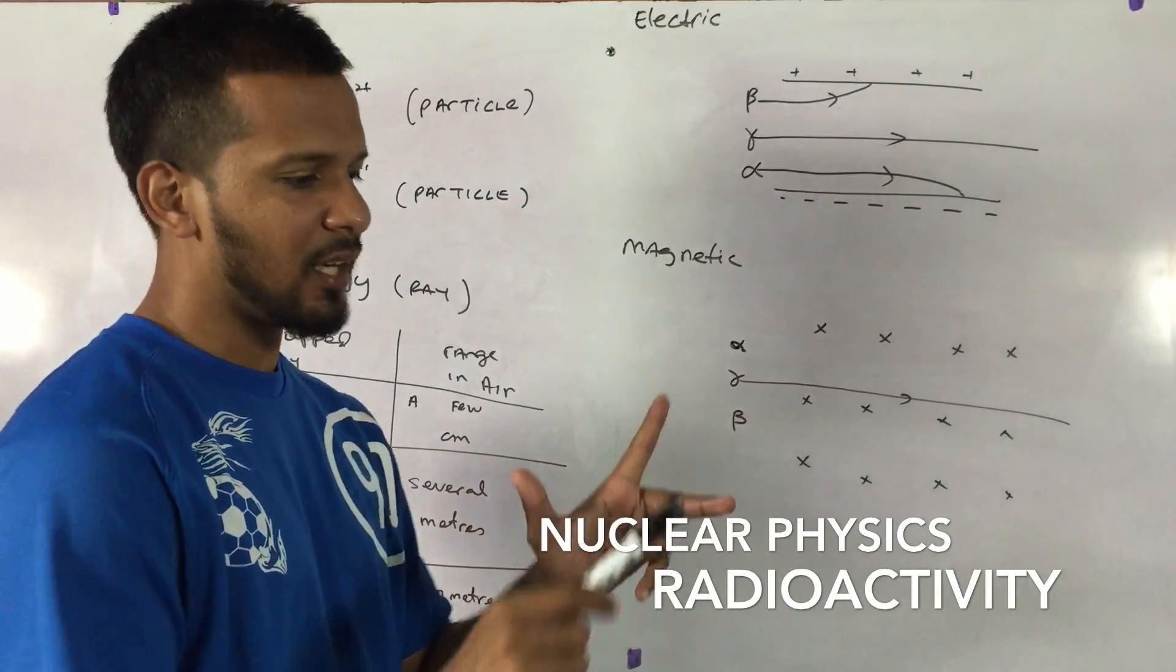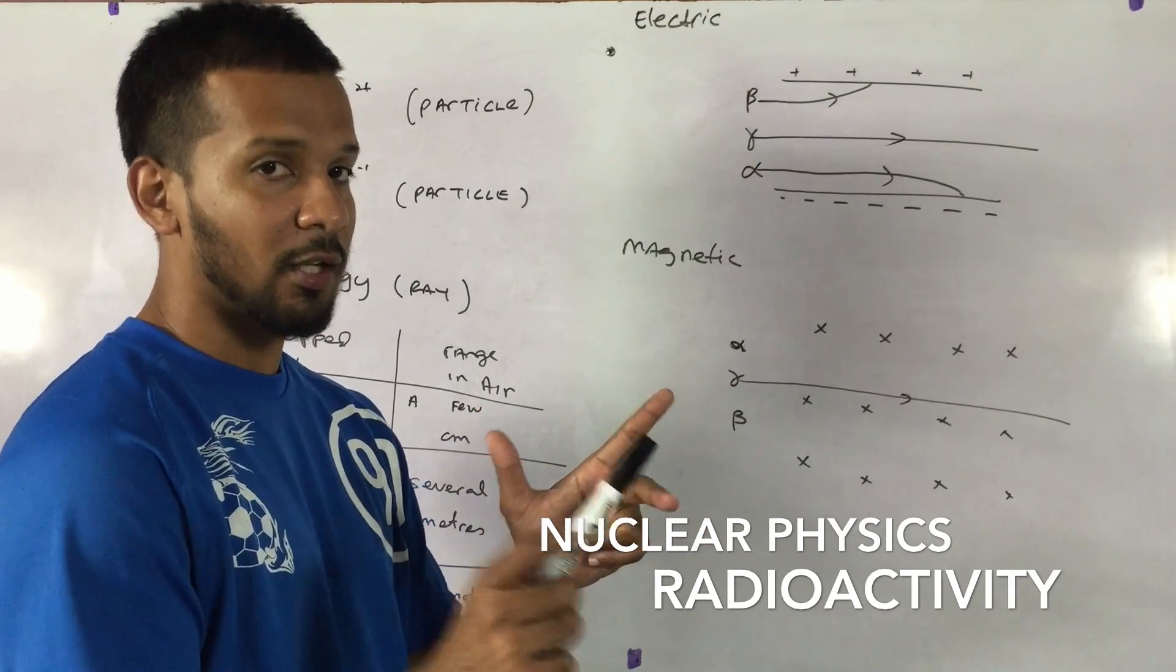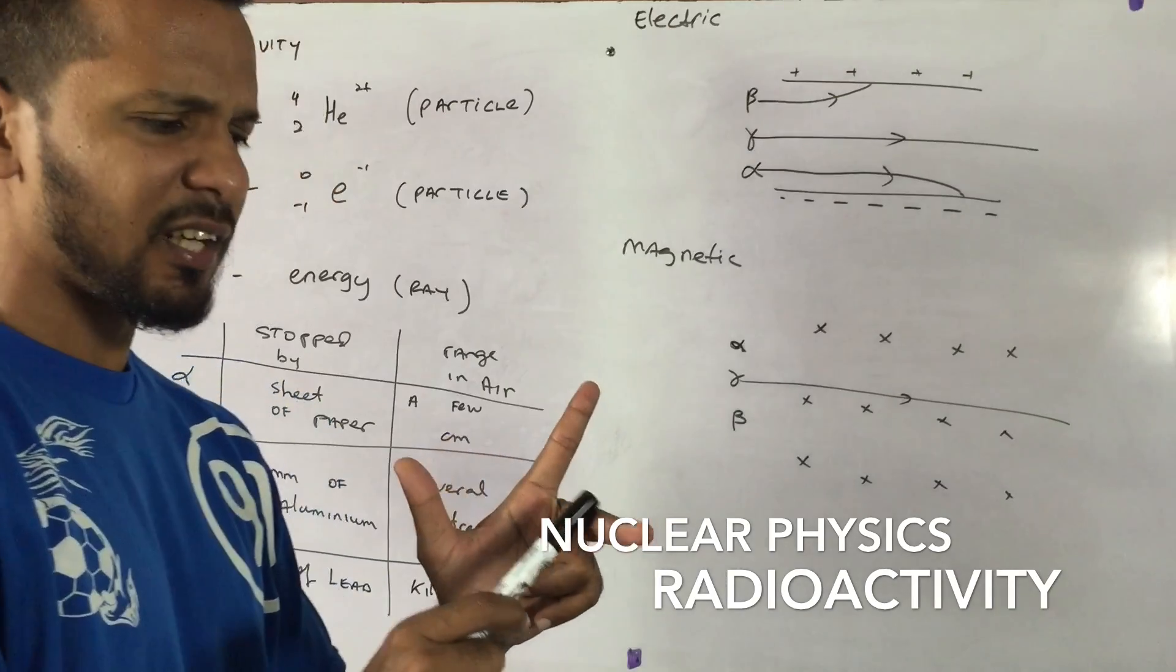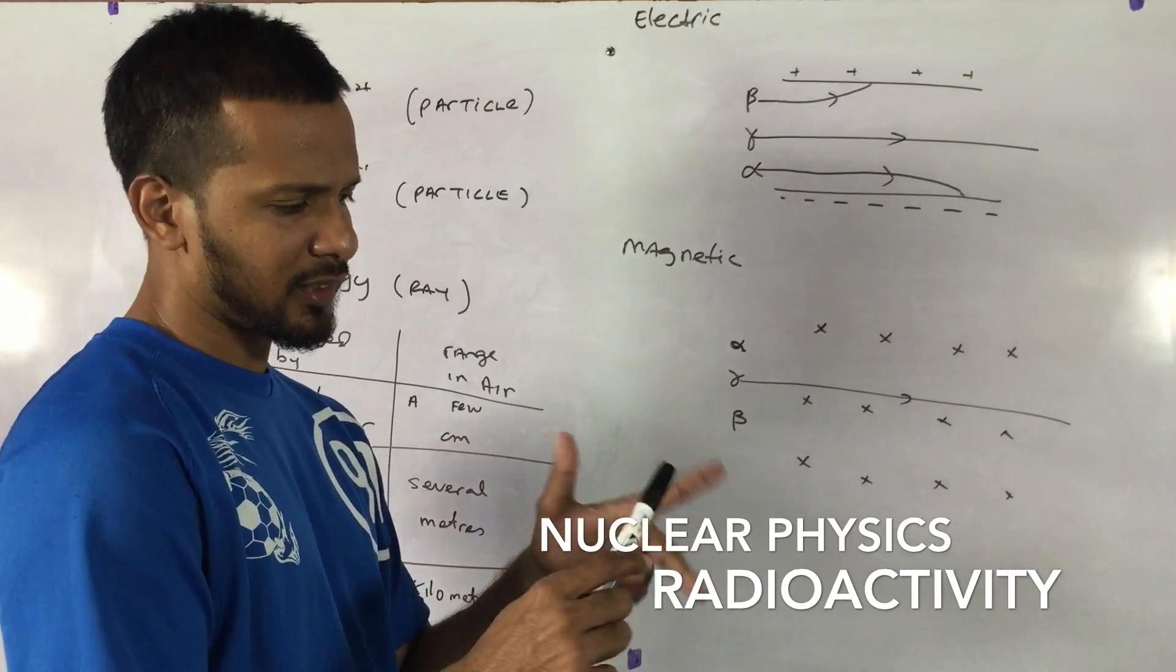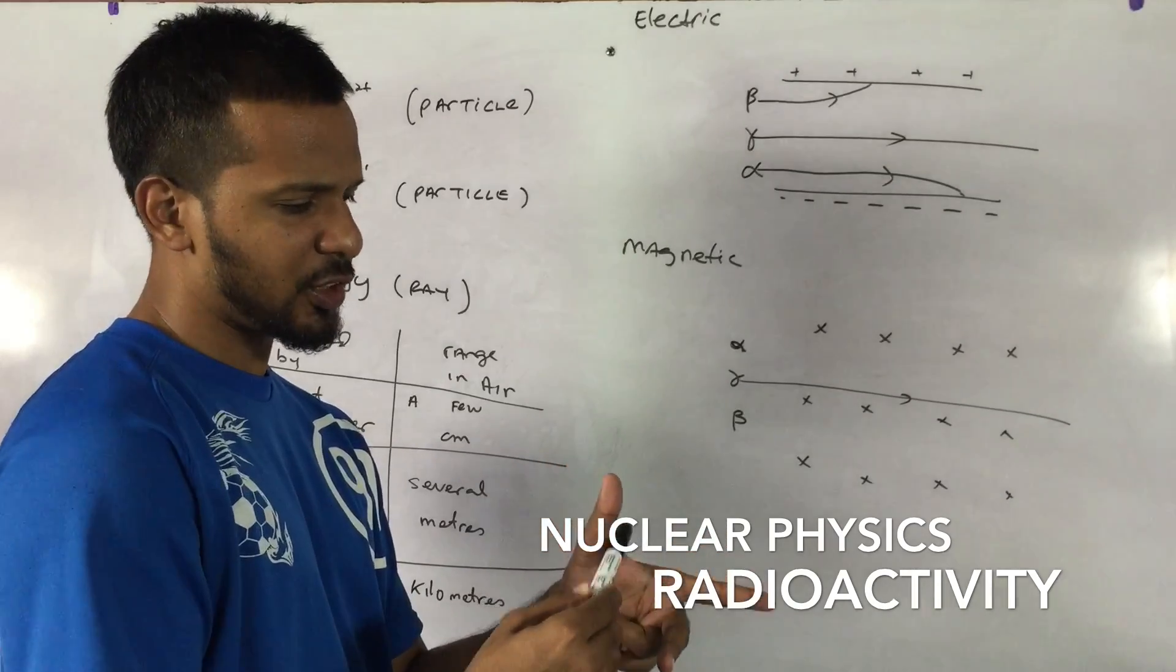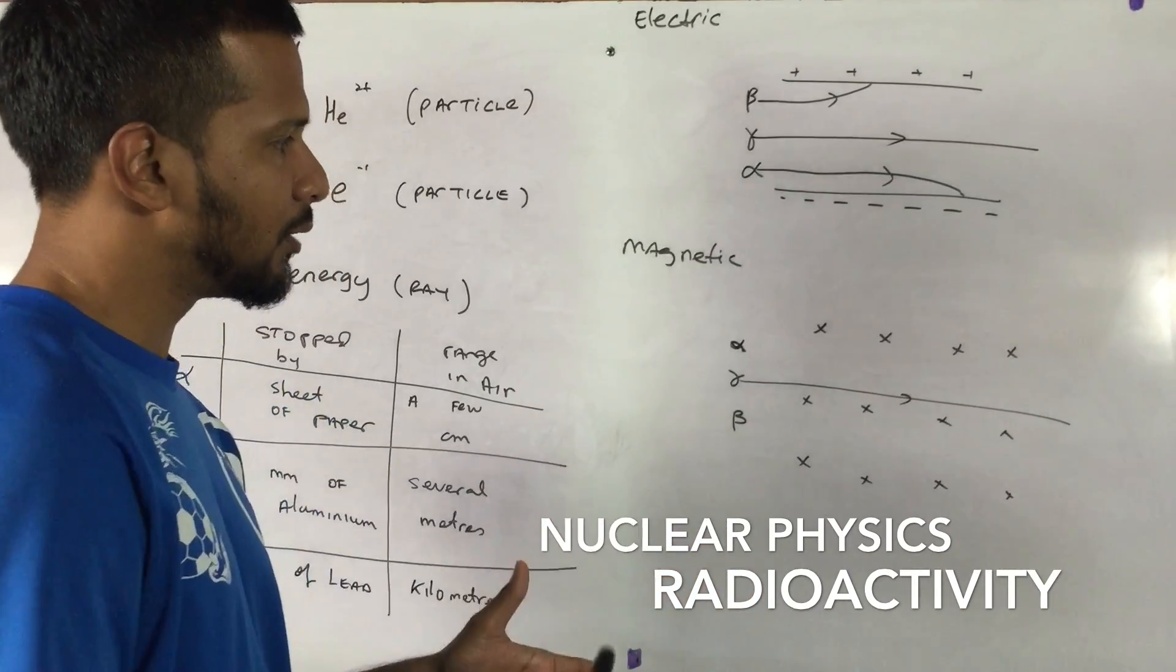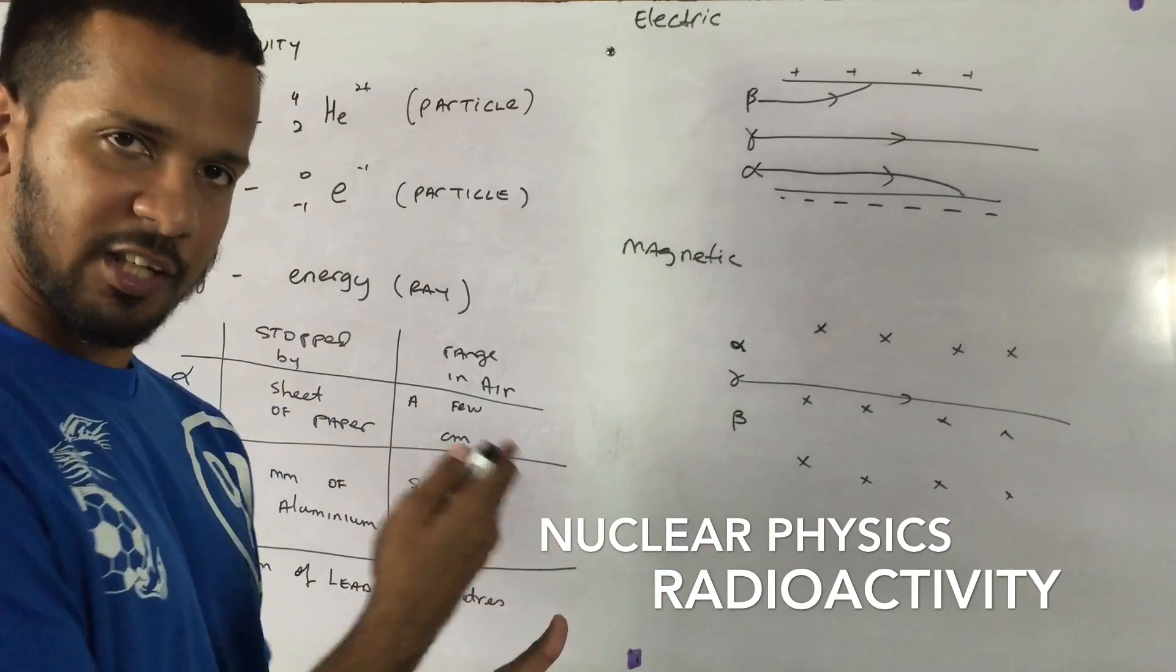Same thing applies here. A current carrying conductor, conventional current, is basically a positively moving particle. So if I have a positively moving particle in a magnetic field, it should experience a force. So let's see if we can work out the direction of the force.